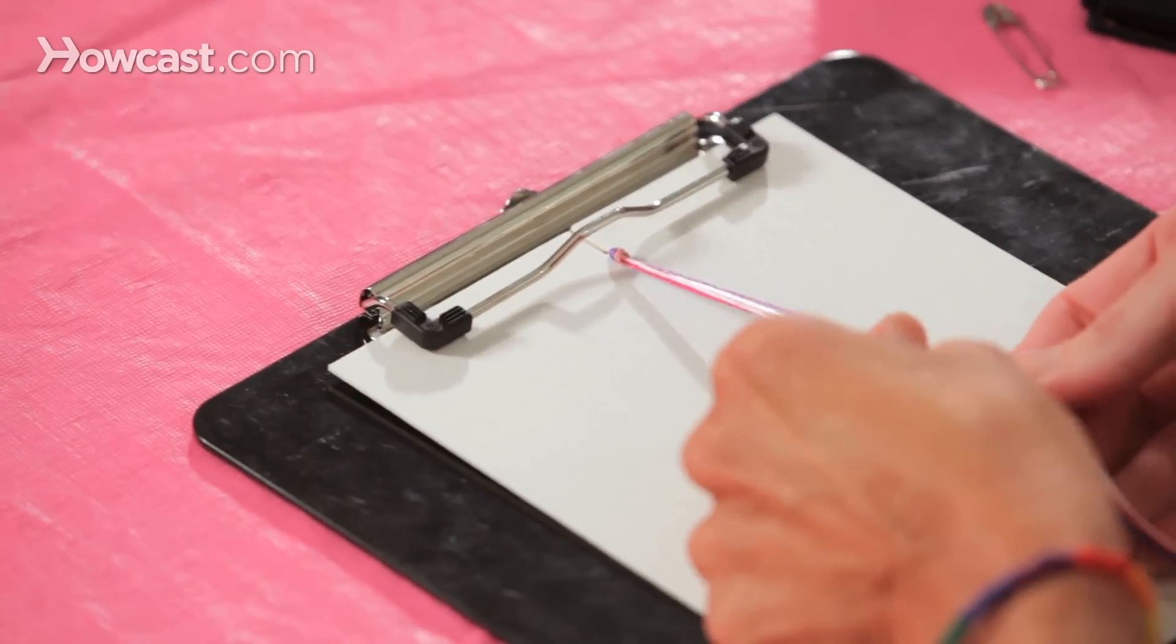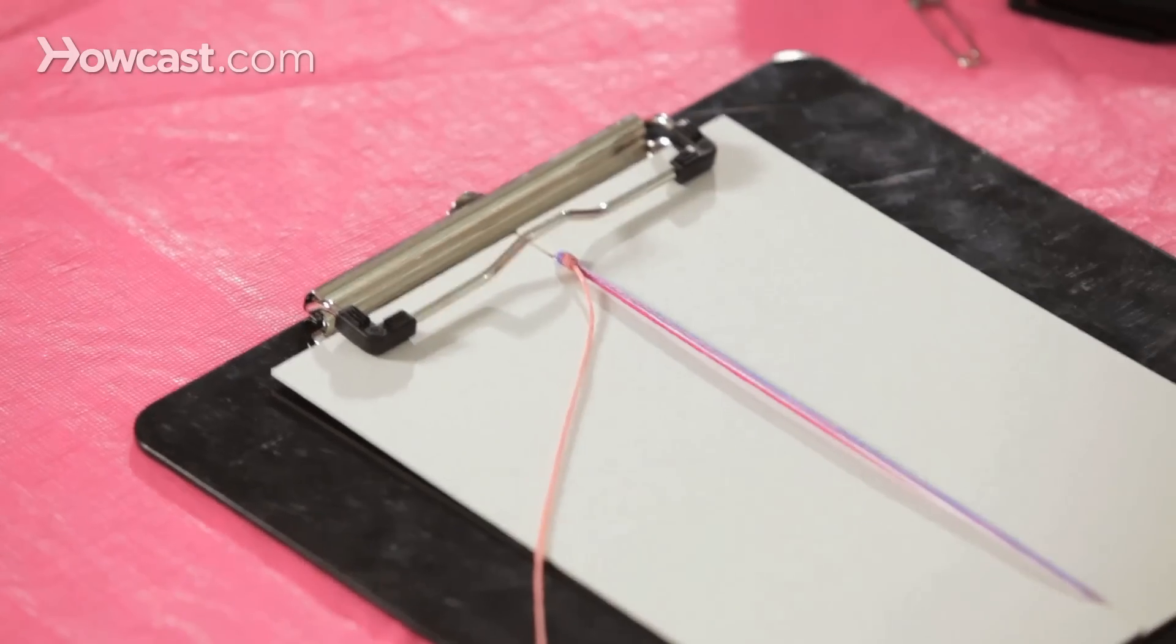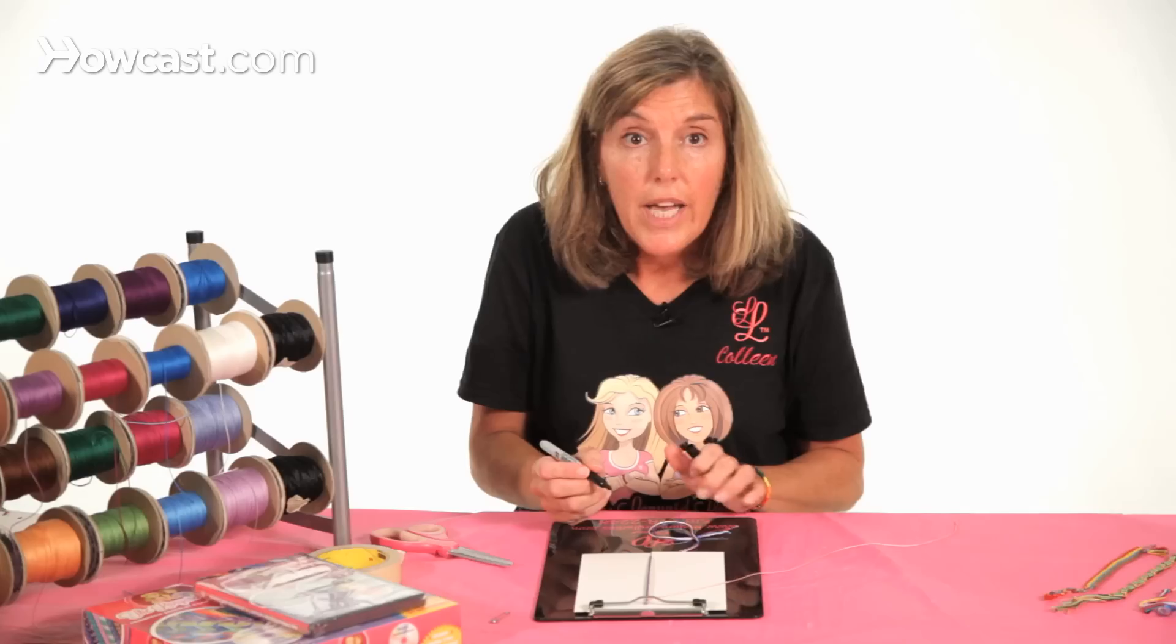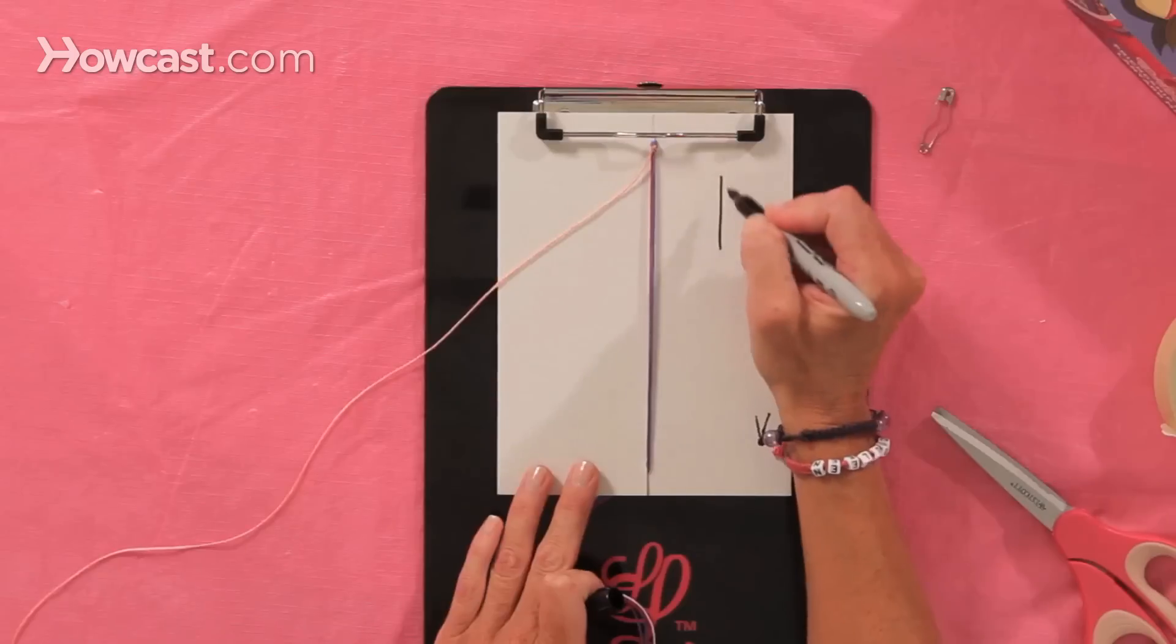Now we're going to take four of the five strings and tuck them in the slit at the bottom of the board. And this is the bracelet that uses the backward knot, which is the letter D.